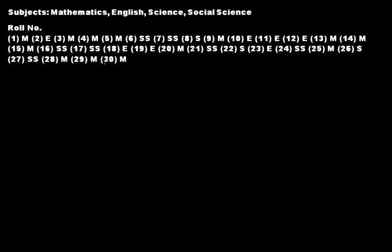Assume that in a class, four subjects are taught: mathematics, English, science, and social science. The strength of the class is 30, and we have arranged the roll numbers of the students in ascending order, starting from roll number 1 up to roll number 30.